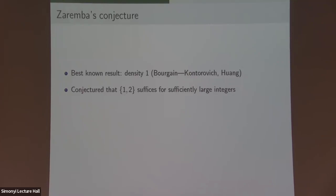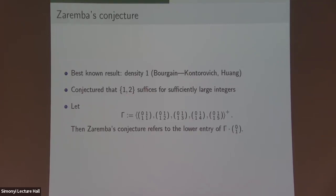Why is this a thin group setting? Consider the semi-group generated by the matrices [0,1;1,1] and [0,1;1,k] for k in your alphabet. It's not too hard to show that the orbit of the vector (0,1) under this semi-group — if you get m/n, this is exactly equivalent to putting those same numbers in your continued fraction. So asking what numbers appear as a denominator in Zaremba's conjecture is exactly asking: what is the lower entry of the orbits of this thin semi-group?